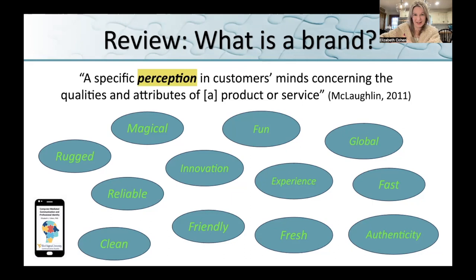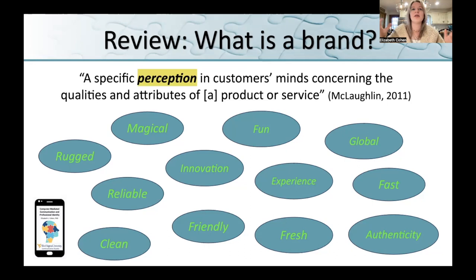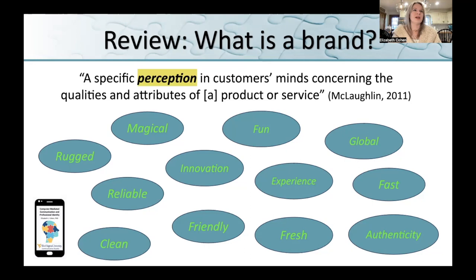So McDonald's — when we were doing the reflection activity — some of you would say their brand is convenience, which I'd agree McDonald's wants you to associate with them. But is that the core of their brand? Because any convenient fast food restaurant is trying to market convenience. The question is how does McDonald's brand differ from Hardee's, Arby's, Chick-fil-A? For instance, part of the Chick-fil-A brand is they have Christian values — that might be something that distinguishes them from other fast food places. Start thinking about those types of things.